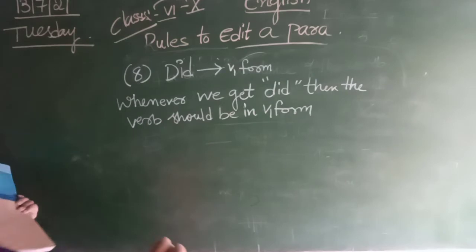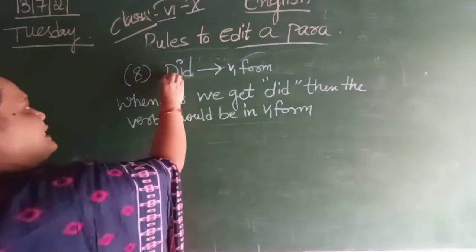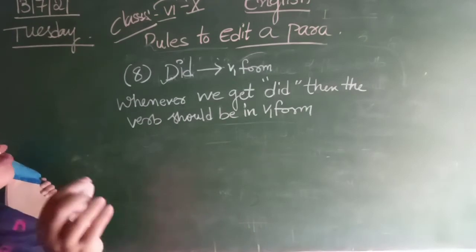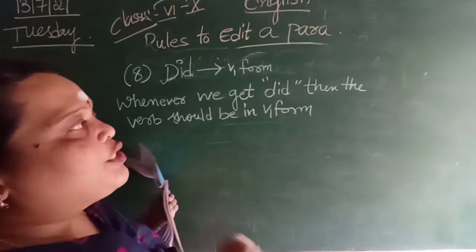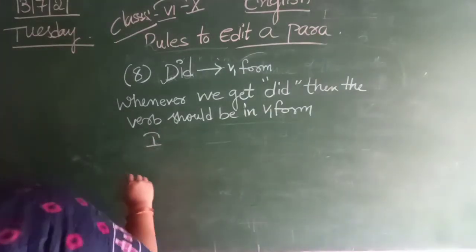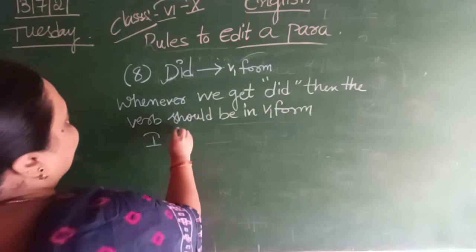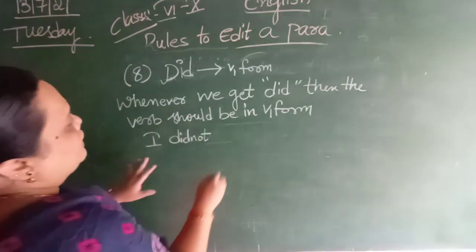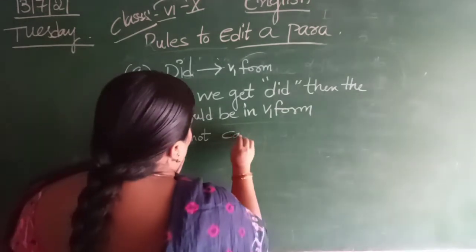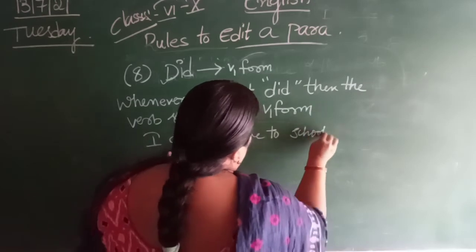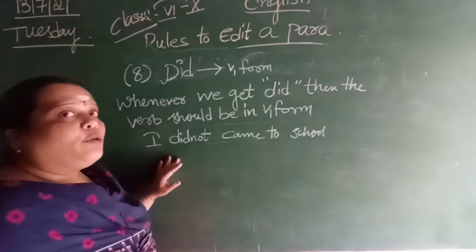If we get a did word, then the verb should be in V1 form. Come on, see. I did not, I did not, came to school. Okay. I did not came to school.